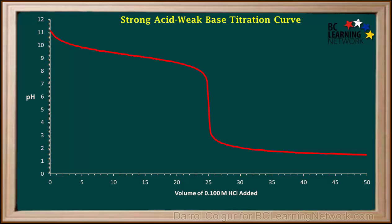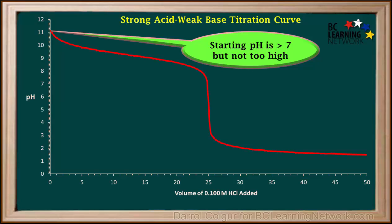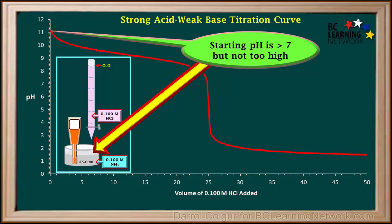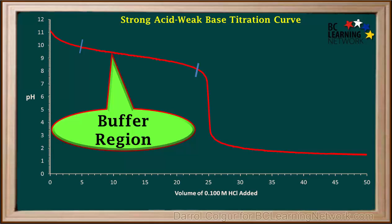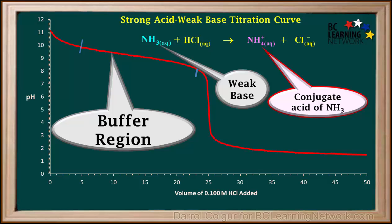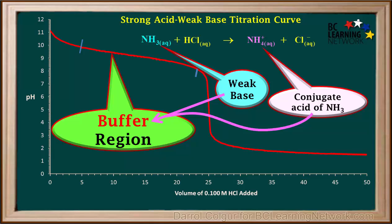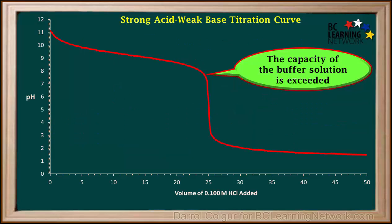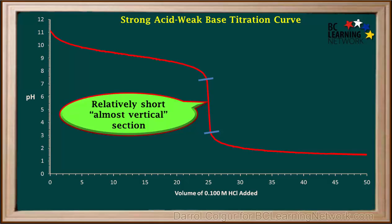Now we'll review the main features of a strong acid–weak base titration curve. The pH at the very beginning, before any acid is added, is above 7 but not really high like 13 or 14, because at this point all we have is weak base in the beaker. The buffer region is the portion of the curve near the beginning when the curve shows a decrease in slope — during this region we still have a slight excess of the weak base NH3, and the reaction has produced some of its conjugate acid NH4+. The combination of a weak base and its conjugate acid constitutes a buffer solution. At some point the capacity of the buffer is exceeded and the pH starts to drop rapidly. The almost vertical section of this strong acid–weak base titration curve is shorter than it would be for a strong acid–strong base titration curve.